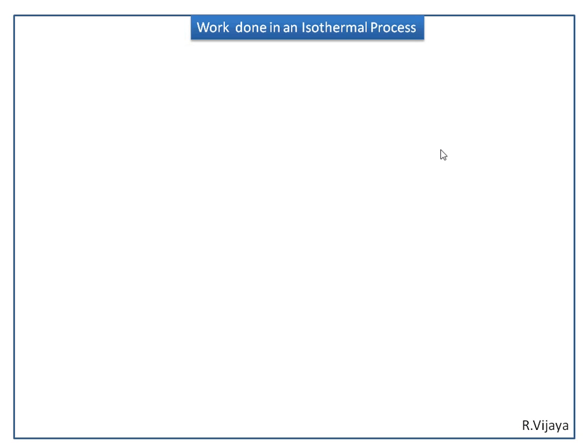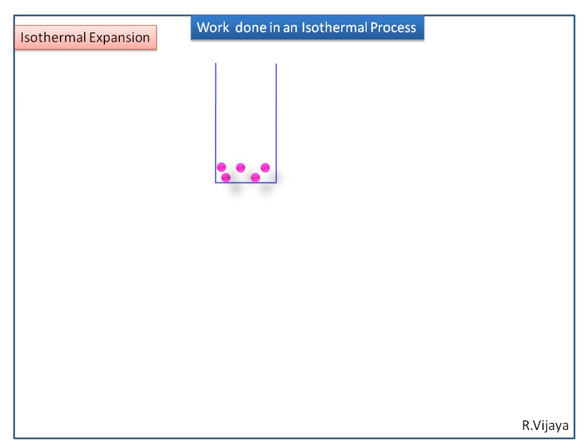Now, we discuss work done in an isothermal process. First, we see isothermal expansion. Consider the cylinder having N number of ideal gaseous molecules, containing a weightless and frictionless piston. This is the PV diagram.